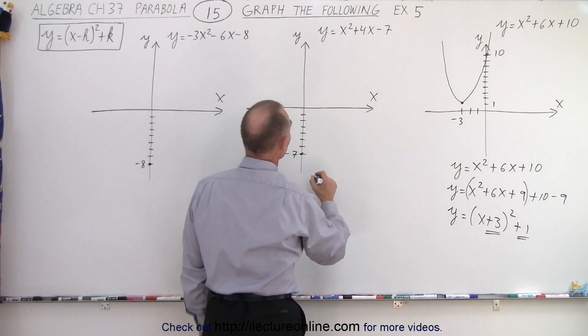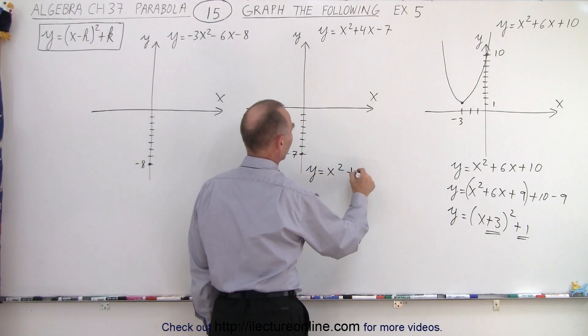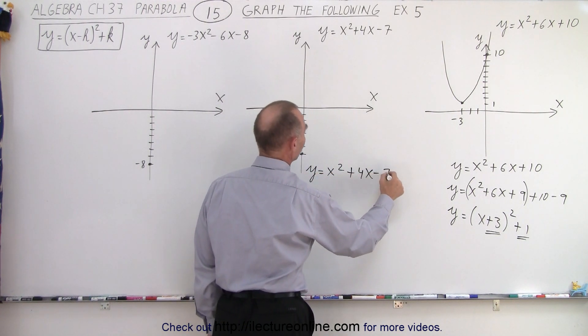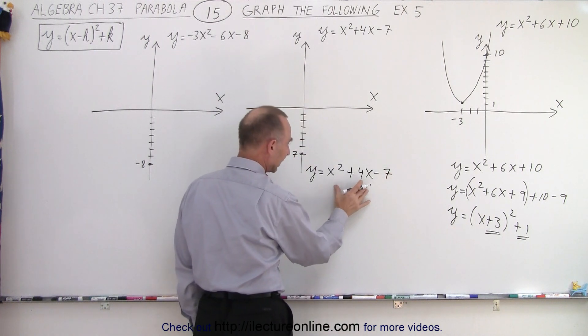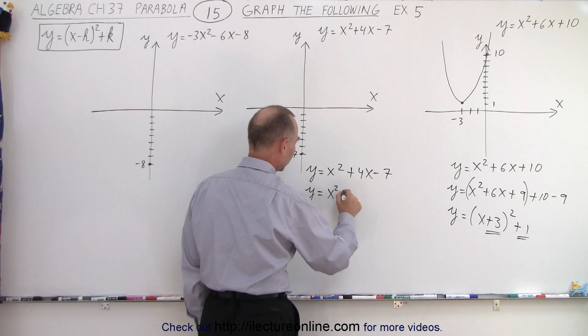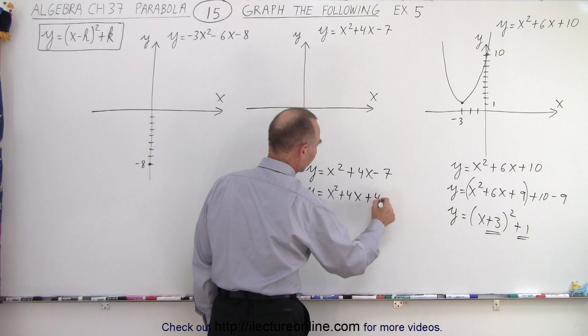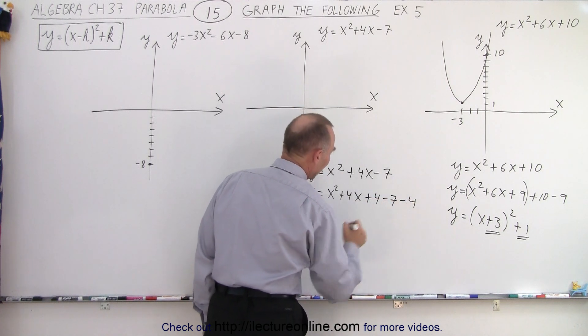Our next equation, again we'll rewrite it here: y equals x squared plus 4x minus 7. Again I'm going to take half of this and square it. So we have y equals x squared plus 4x. Half of 4 is 2 squared, I get plus 4 and of course minus 4.